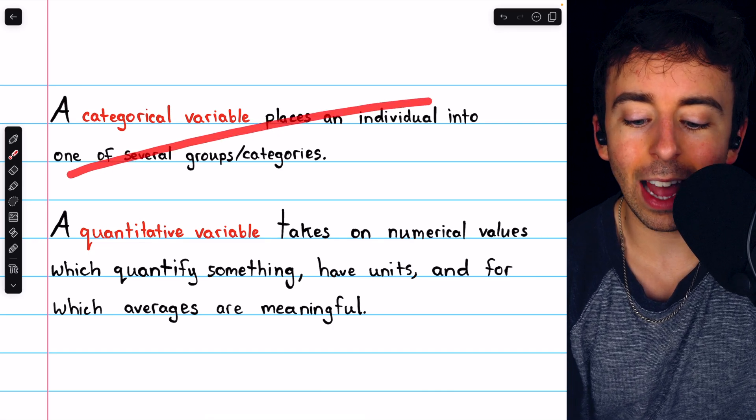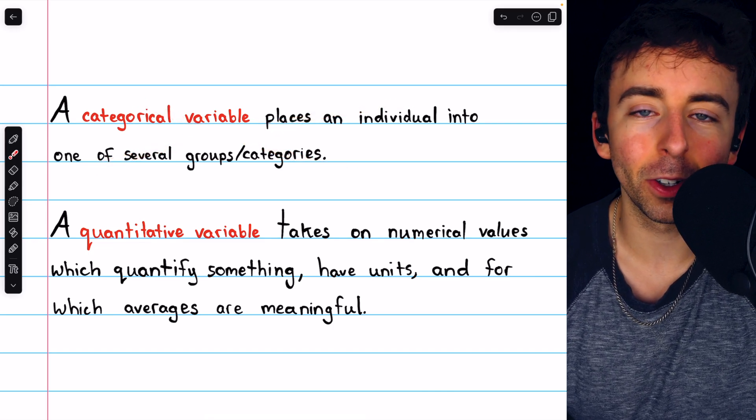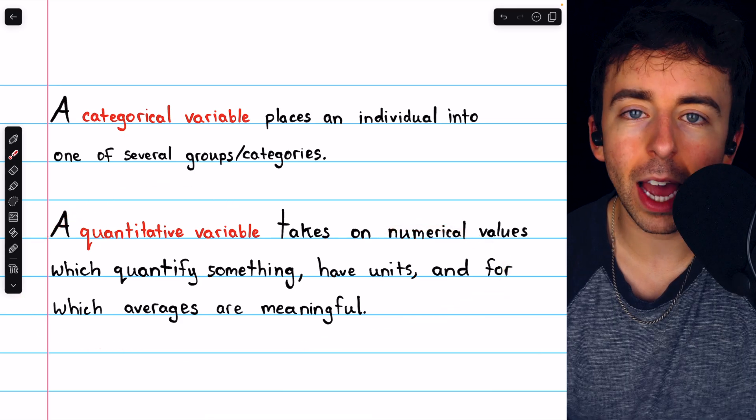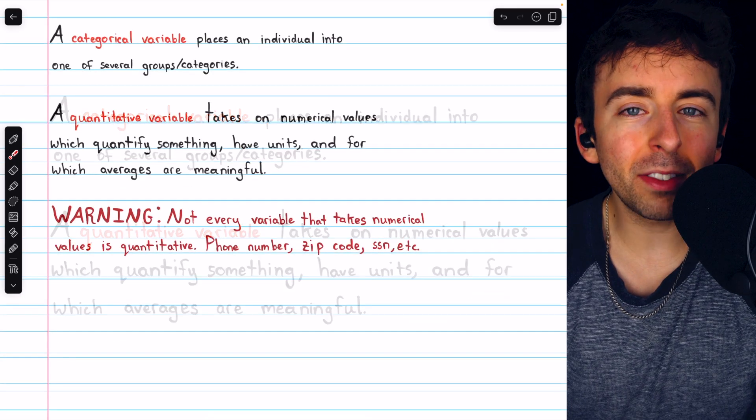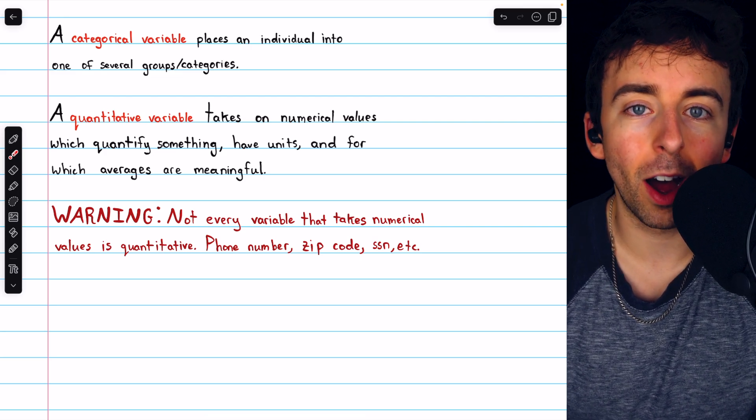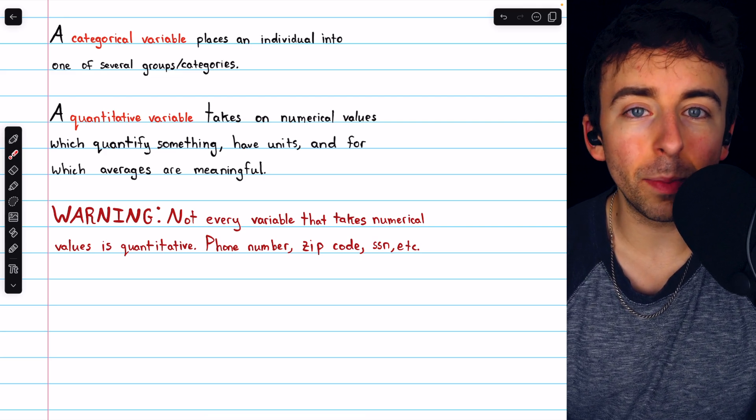For example, you wouldn't calculate the average eye color of students in a class, but you might calculate the average GPA of students in a class. This may seem very simple at a glance, and in practice, it is very simple oftentimes, but we do need to be careful.